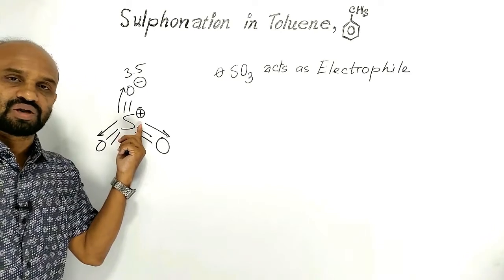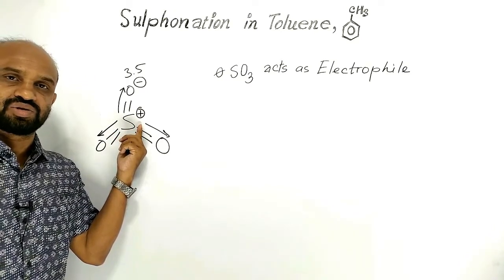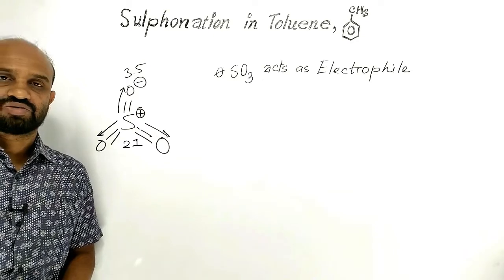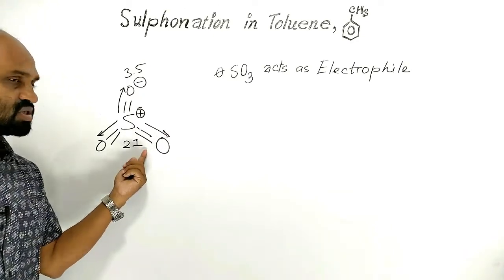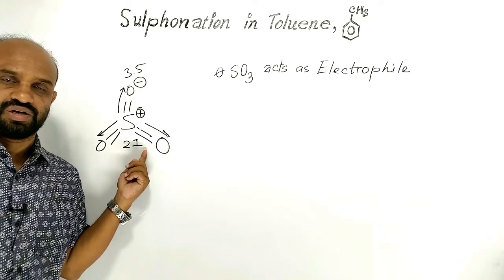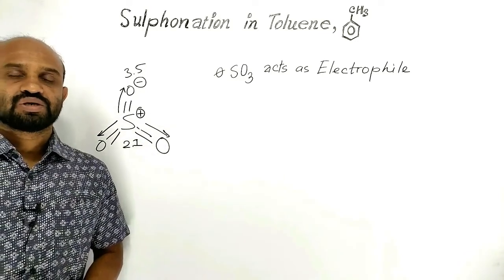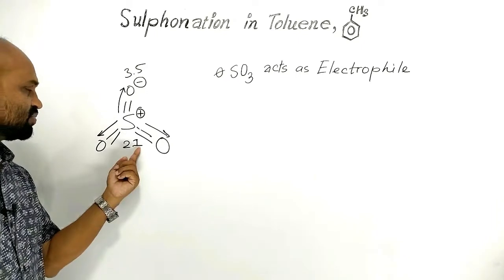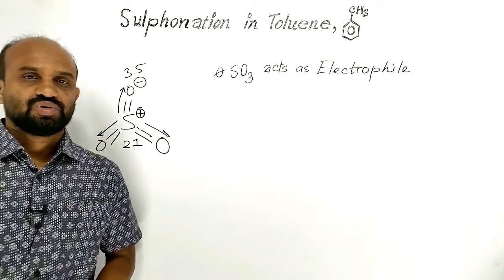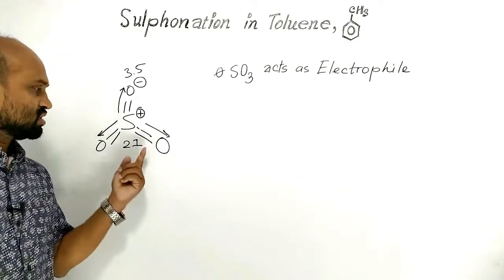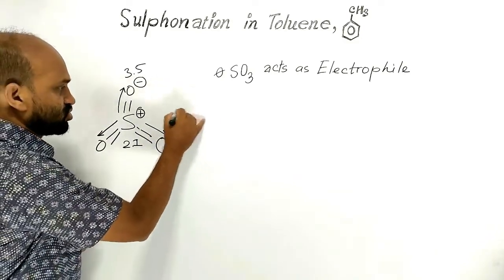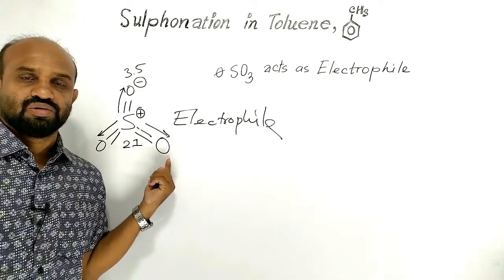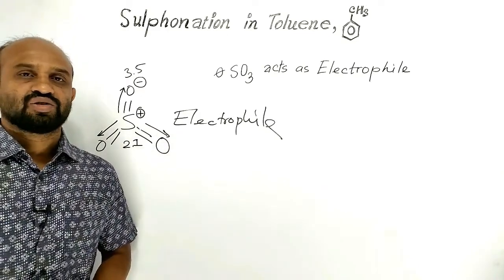The other two sulfur-oxygen bonds are affected in the same way — covalently bonded electrons move towards oxygen. Consequently, the central atom sulfur gets positively charged and experiences electron deficiency. Because of this electron deficiency, the sulfur trioxide molecule acts as an electrophile. Since it is a neutral molecule, sulfur trioxide is a kind of neutral electrophile.